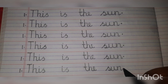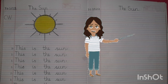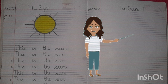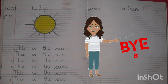We are done with our classwork, children. This is the classwork, and the right-hand side is your homework. So draw the sun first and then write the first sentence of the sun, okay? Till the last line. Alright? Thank you, children. Bye-bye!